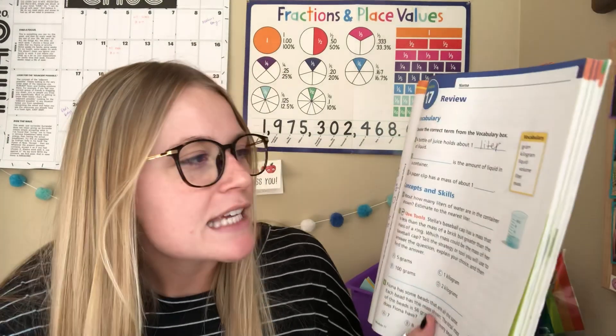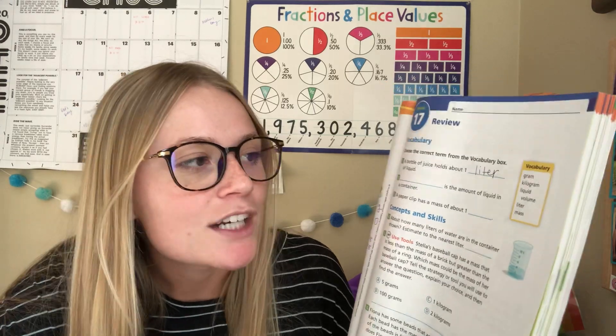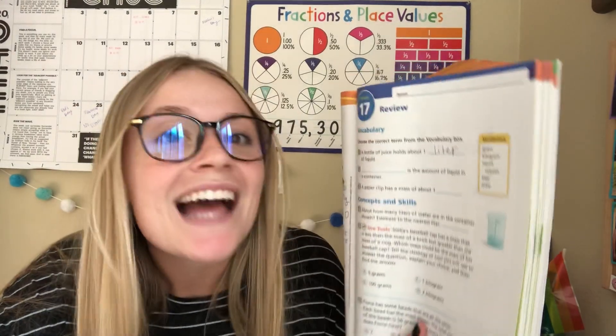Number two says blank is the amount of liquid in a container. That would be liquid volume.